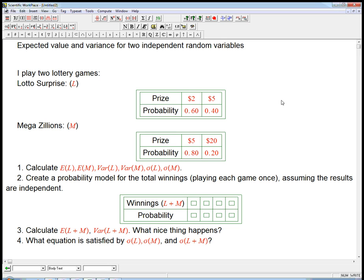I want to look at a simple example of combining two independent random variables and looking at expected value and variance. And we're going to discover something very nice about how that works.